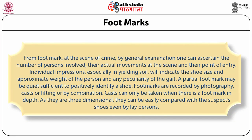Footmarks: from footmarks at the scene of crime, by general examination one can ascertain the number of persons involved, their actual movements at the scene, and their point of entry. Individual impressions especially in yielding soil will indicate the shoe size and approximate weight of the person and the peculiarity of the gait. A partial footmark may be quite sufficient to positively identify a shoe. Footmarks are recorded by photography, cast, or lifting, or by combination. Casts can only be taken when there is a footmark in depth and, being three-dimensional, can be easily compared with the suspect's shoes even by laypersons.